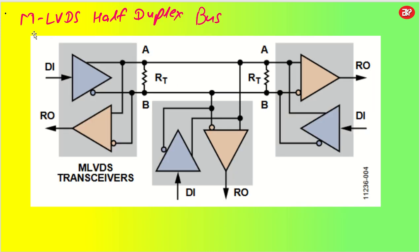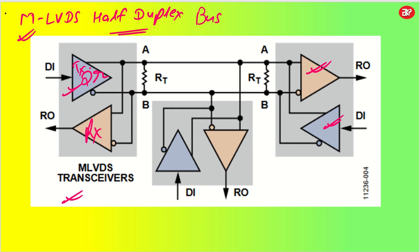Coming back to MLVDS — MLVDS half duplex and full duplex. MLVDS transceivers means it is going to have both driver and receiver together. DIN is coming in and it gets converted to your differential signal, which goes to your receiver. The pink or purple color is your receiver and the blue color is your driver.